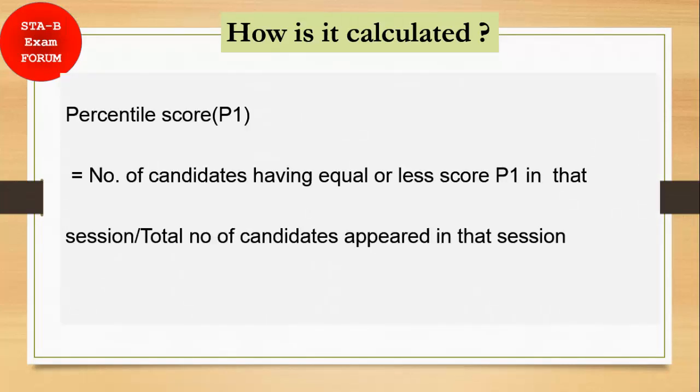So the formula is like this: percentile score P1 is the number of candidates having equal or less score than P1 in that session, divided by total number of candidates appearing in that session, multiplied by 100.